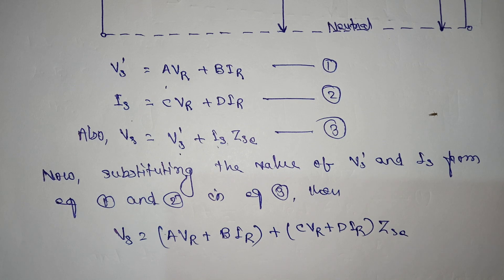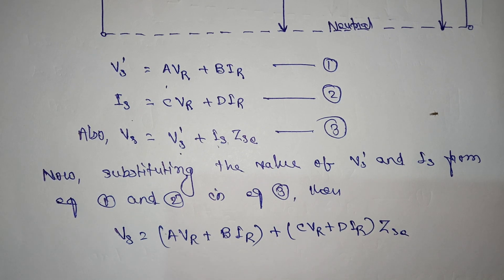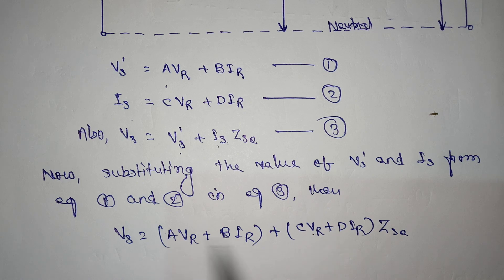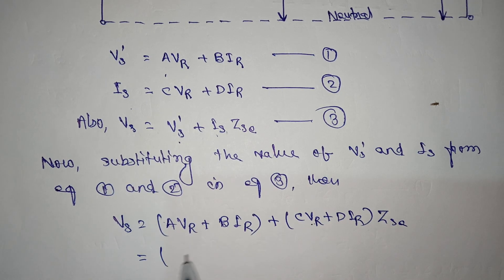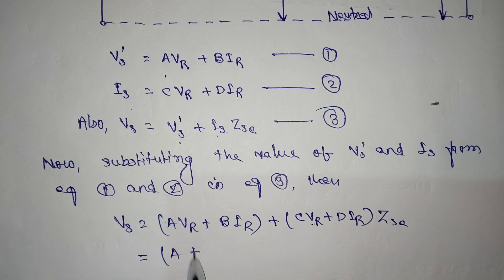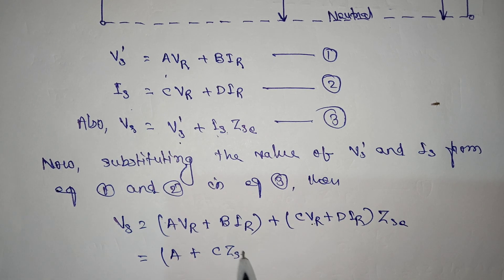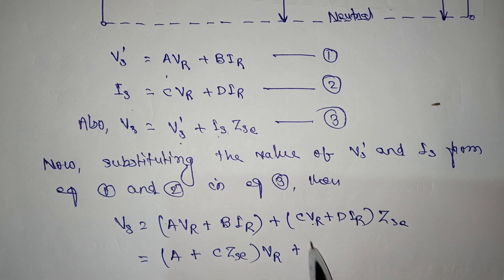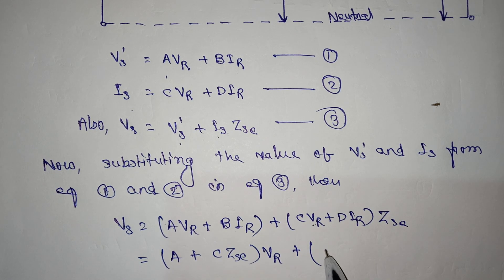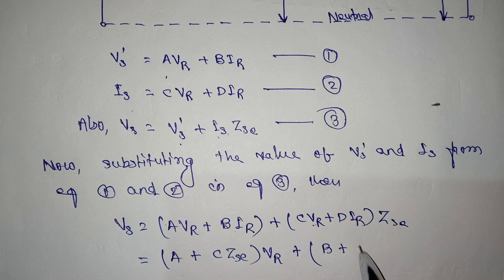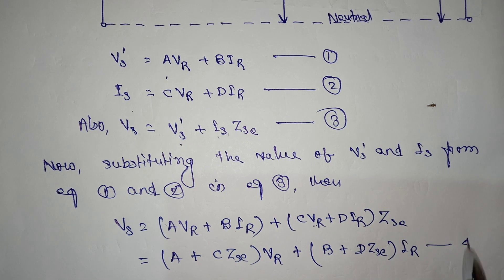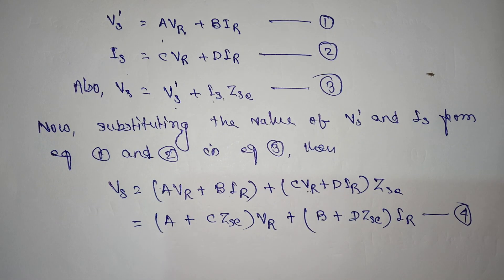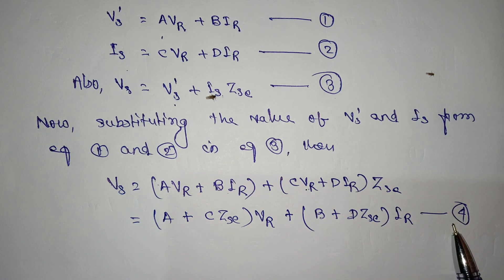Now we can see there are VR terms to combine. Keeping one bracket, VR gets the coefficient A plus C·Zse. Taking IR together, IR gets the coefficient B plus D·Zse. This gives us equation number four.